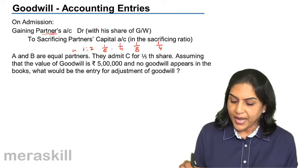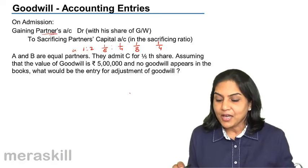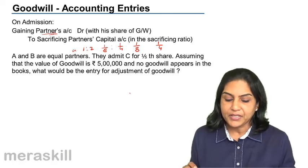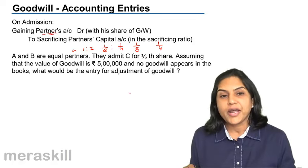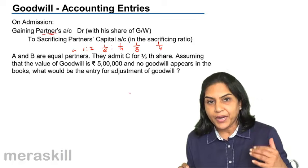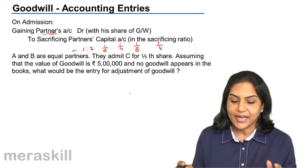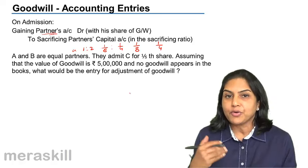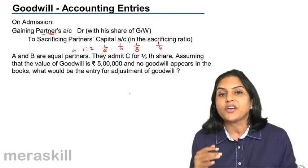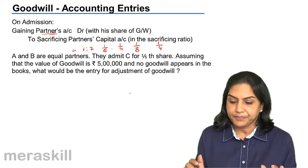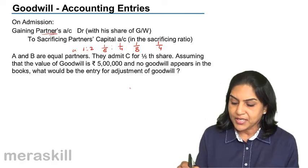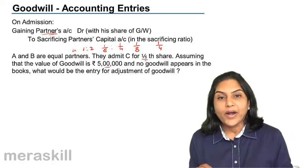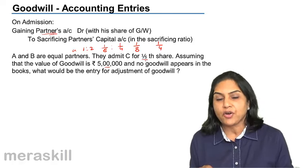Let us take an example. A and B are equal partners and they admit C for one-fifth share. Assuming that the value of goodwill is five lakh and no goodwill appears in the books, what would be the entry for adjustment of goodwill? These goodwill entries on admission will be discussed in detail when we discuss admission again. This compensation is paid when the entire value of goodwill is not reflected in the balance sheet. Value of goodwill is five lakh, C is admitted for one-fifth share, therefore C's share of goodwill is one lakh.